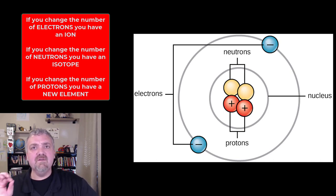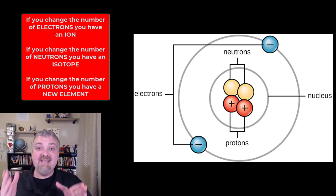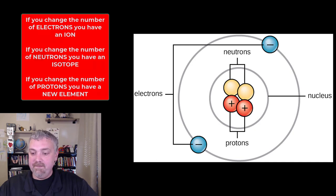If you change the number of neutrons, you now have an isotope of this element. If you change the number of protons, you now have a new element. You cannot change the number of protons. The number of protons determines the atomic number of an atom, which determines where it sits on the periodic table.